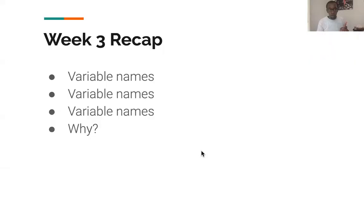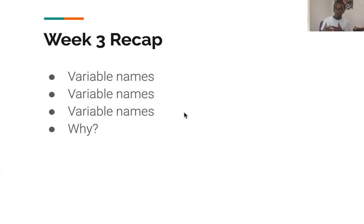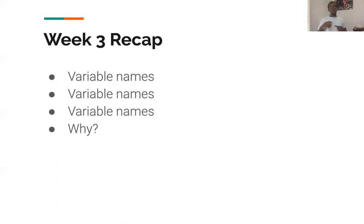Let's look at a recap of week three. One of the things I've talked about is variable naming. It's very, very important that you name your variables correctly. The reason for this is because you want to make sure that your code is readable. You'll understand this best when you're in a situation where you have hundreds of thousands of lines of code and have to keep track of what various things are.